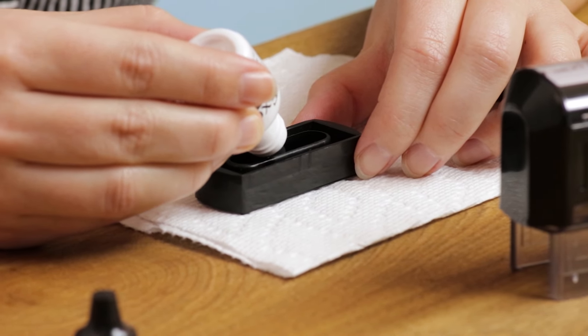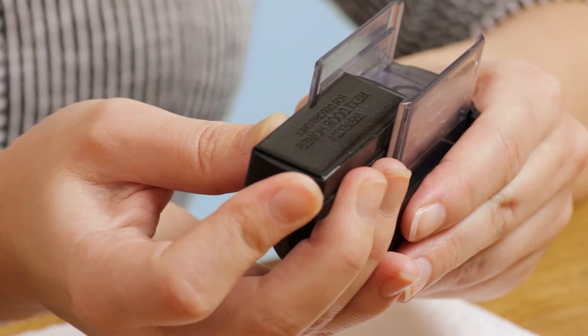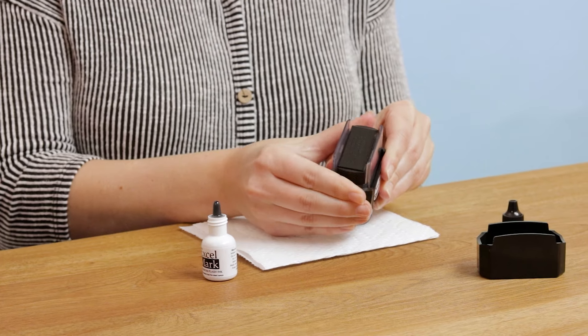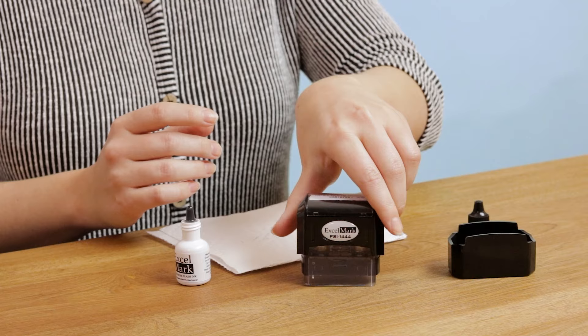Put three to six drops in the ink reservoirs, then slide the cartridge back into the stamp and allow the ink to soak into the pad for several hours before using.